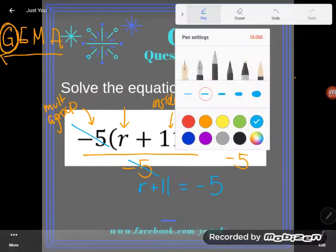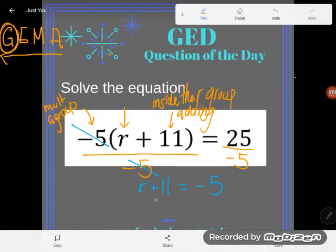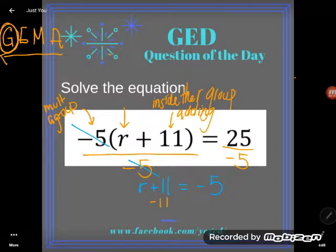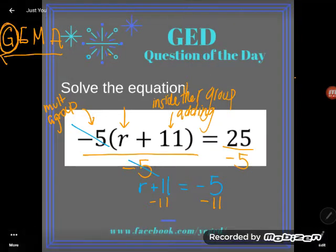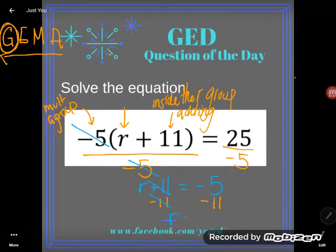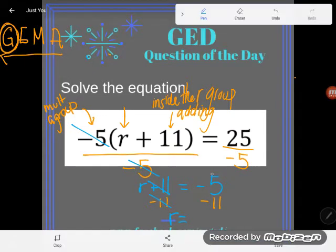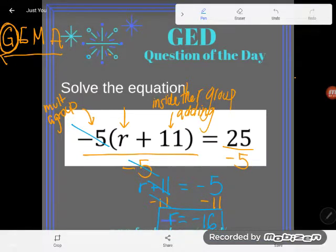Now we're almost done. But r is not totally alone on his side of the equal sign - there's still a plus 11 hanging out. So I will do the opposite: subtract 11 from both sides. We can do whatever we want as long as we do it to both sides. Adding and subtracting 11 cancels, so all I'm left with is r. Negative five minus 11 gives me negative 16. So r equals negative 16.